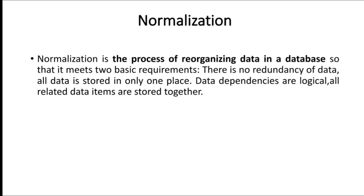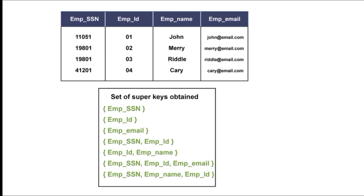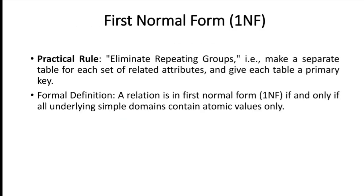So now, what is first normal form, or 1NF? First normal form states that a table or relation is in 1NF if and only if all underlying simple domains contain atomic values only. Before explaining 1NF further, you should understand how relational databases store data.